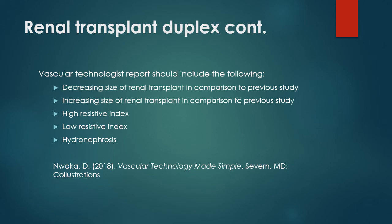After renal transplant duplex, the vascular technologist should include the following in the report: decreasing or increasing size of the renal transplant compared to the previous study — both are indicative of possible rejection — high resistive index, low resistive index, and hydronephrosis. All of this must be included in your final report when submitting results for renal transplant duplex.